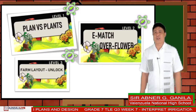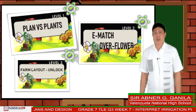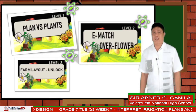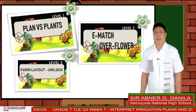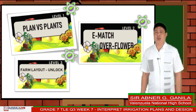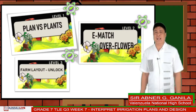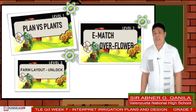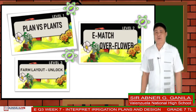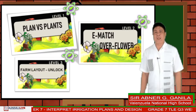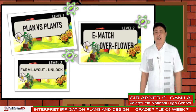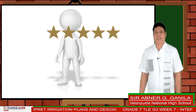Congratulations, you did it! You passed all the levels. You are now ready to identify what planting system to use in planting agricultural crops. At the same time, you have gained knowledge in interpreting farm plans and layout. Here are your five stars!